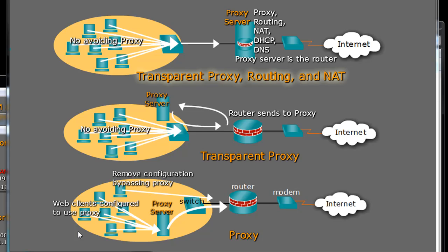That way, all of your web requests on your network can be filtered by the proxy server. The downside to this is that if a client figures out they can just change the preferences in the web browser and turn off the proxy server setting, then they can bypass the proxy server and go straight to the router and make their web request directly to the Internet.